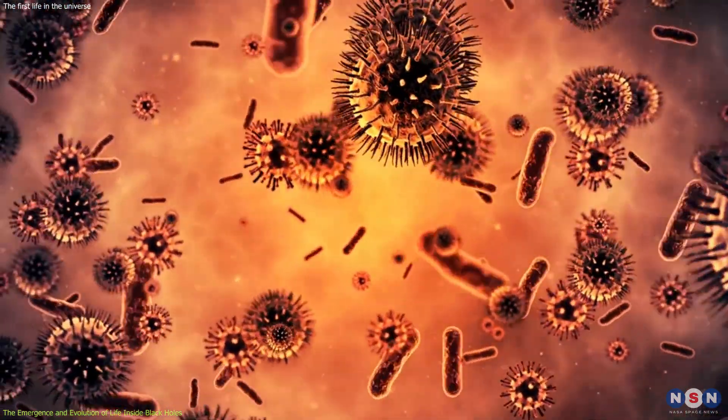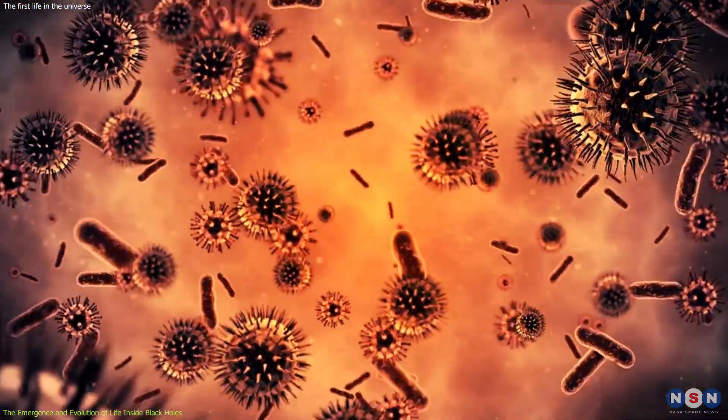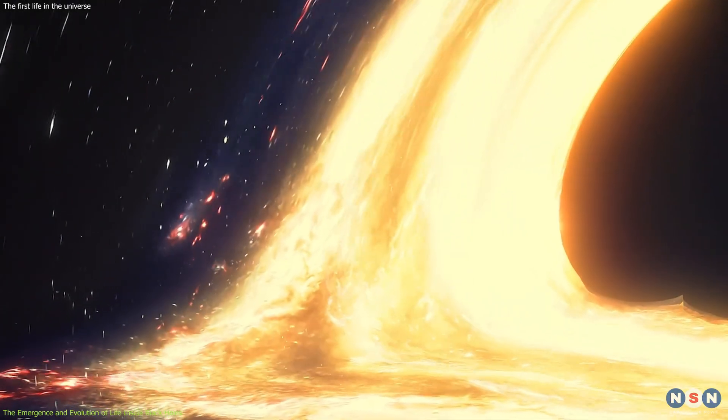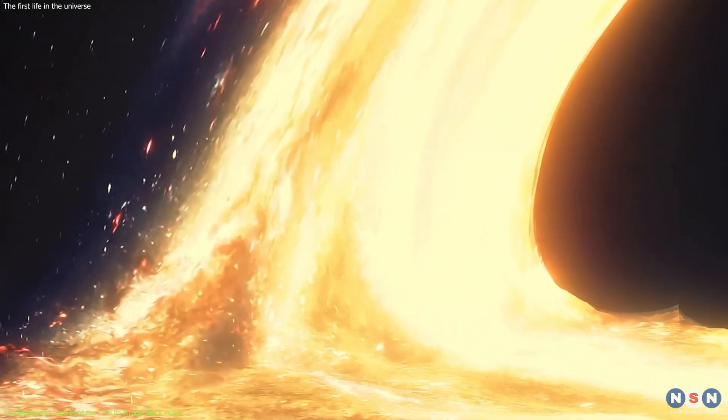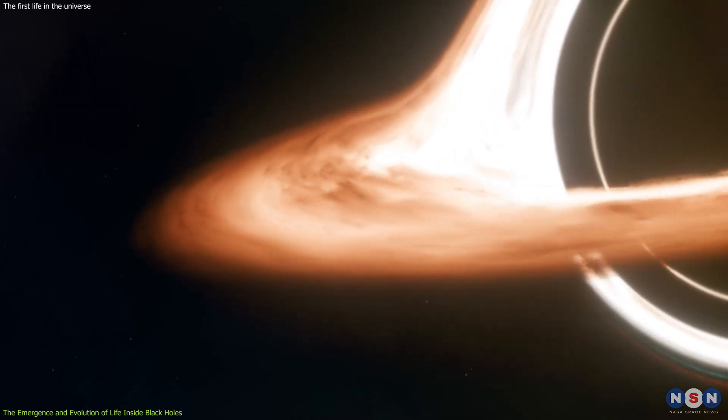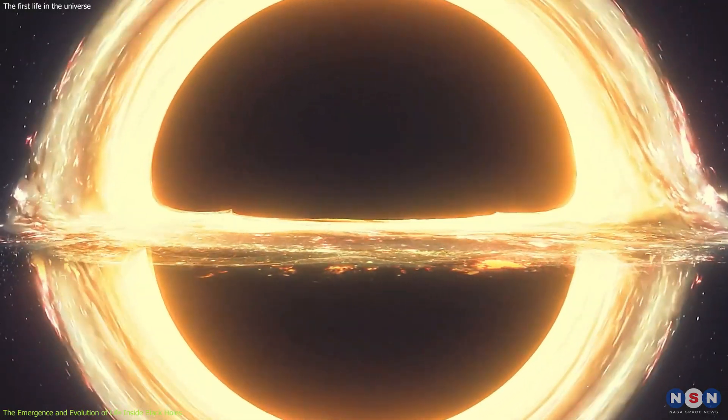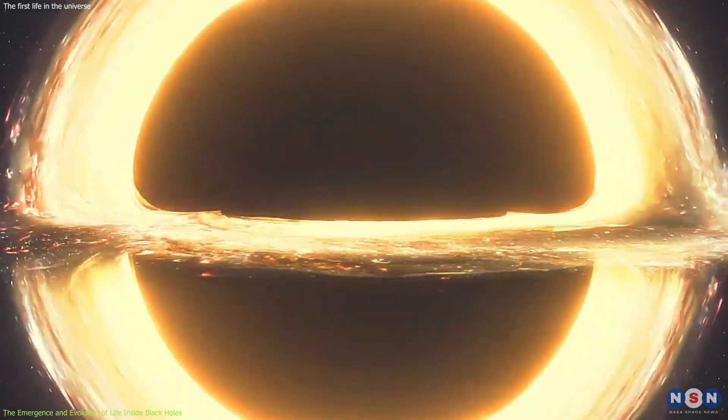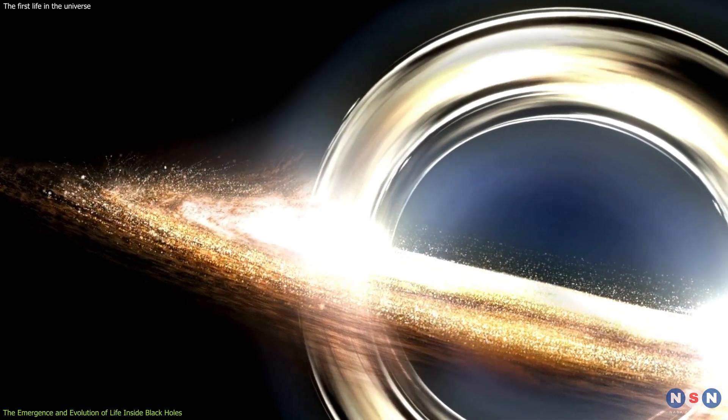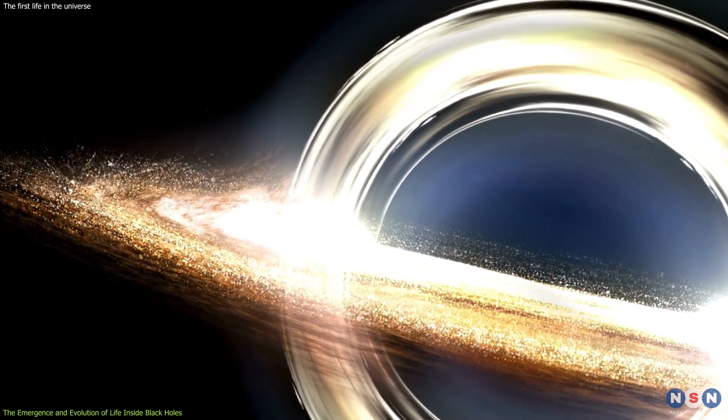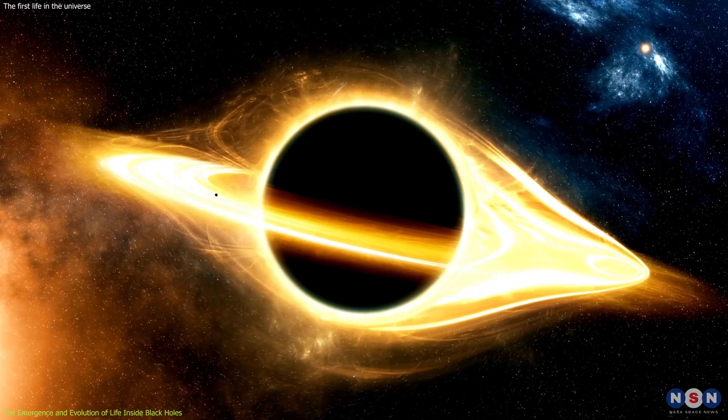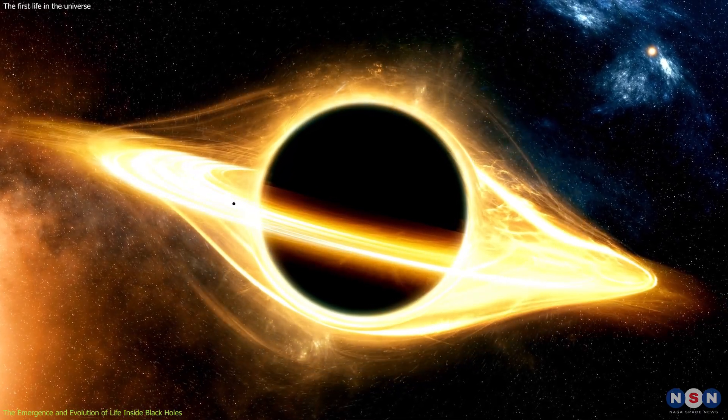The researchers also assumed that these life forms could adapt to the high temperature, pressure, and radiation inside the black hole, and even use them as sources of energy. They calculated that the optimal size and spin of the black hole for life to exist would be about 10 to the power of 8 kilograms and 0.9, respectively. This means that the black hole would have a mass of about 100 million kilograms, or about the mass of a cruise ship, and a spin of about 90 percent of the maximum possible value.